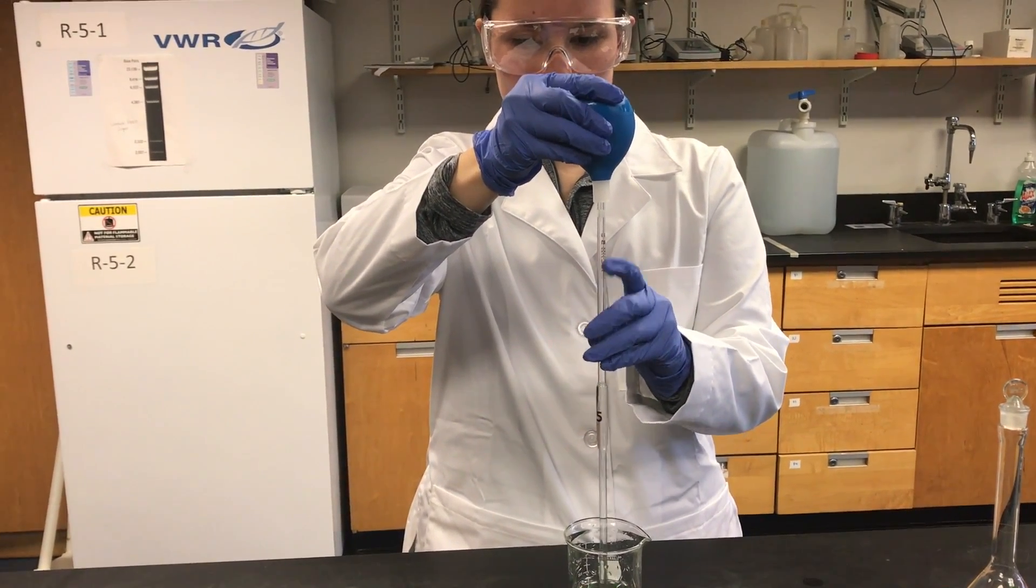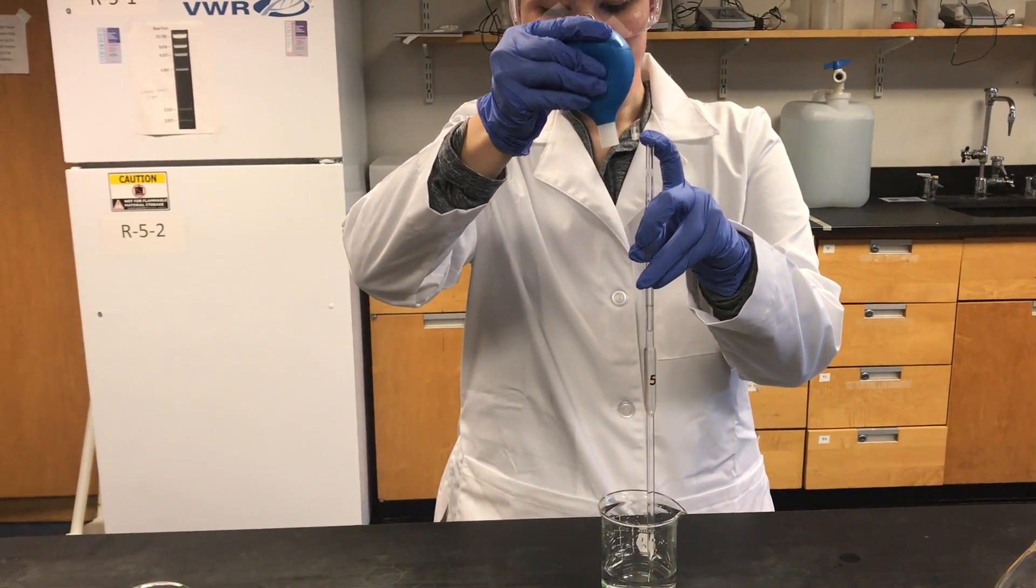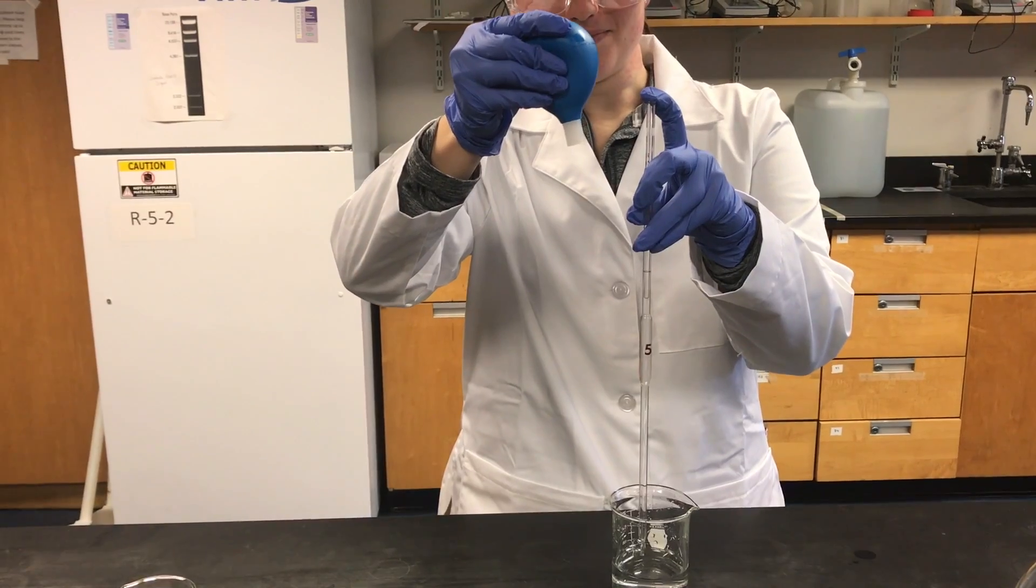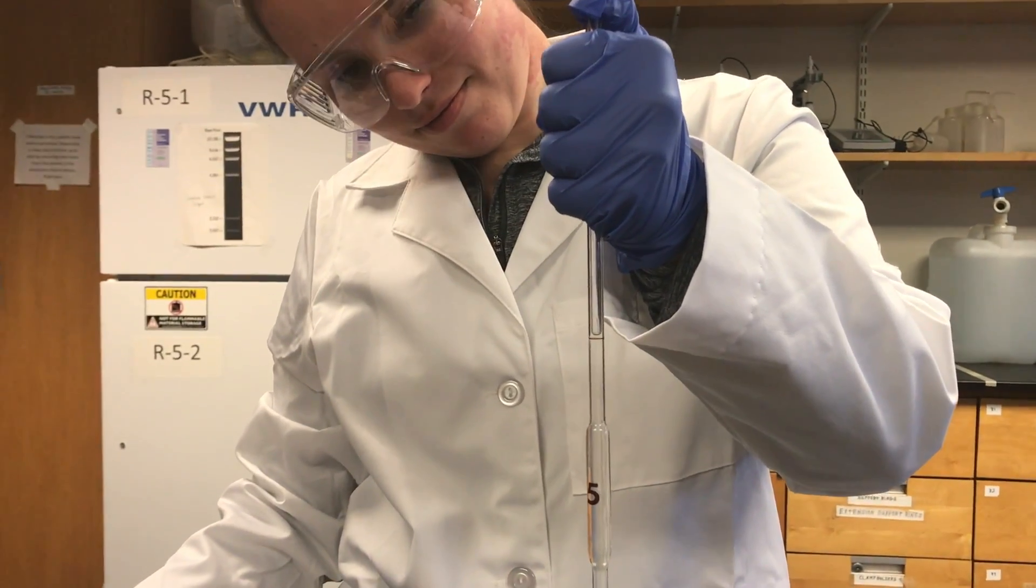The liquid will begin to rise. Once it is above the line, remove the bulb and cap it with your finger. Slowly release pressure from your thumb so that the liquid releases until the bottom of the meniscus is at the red line.